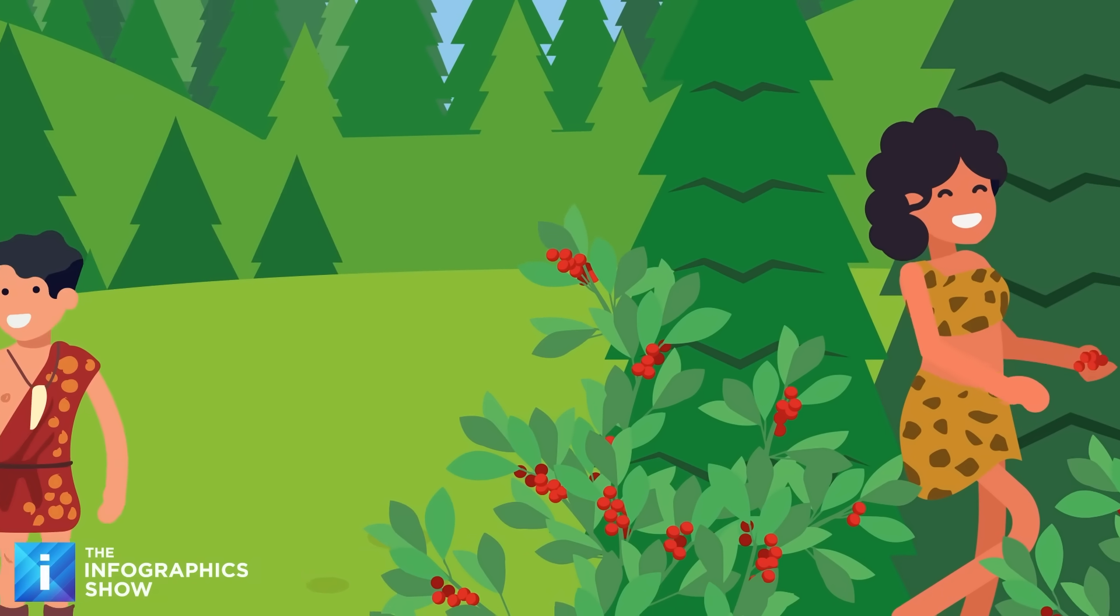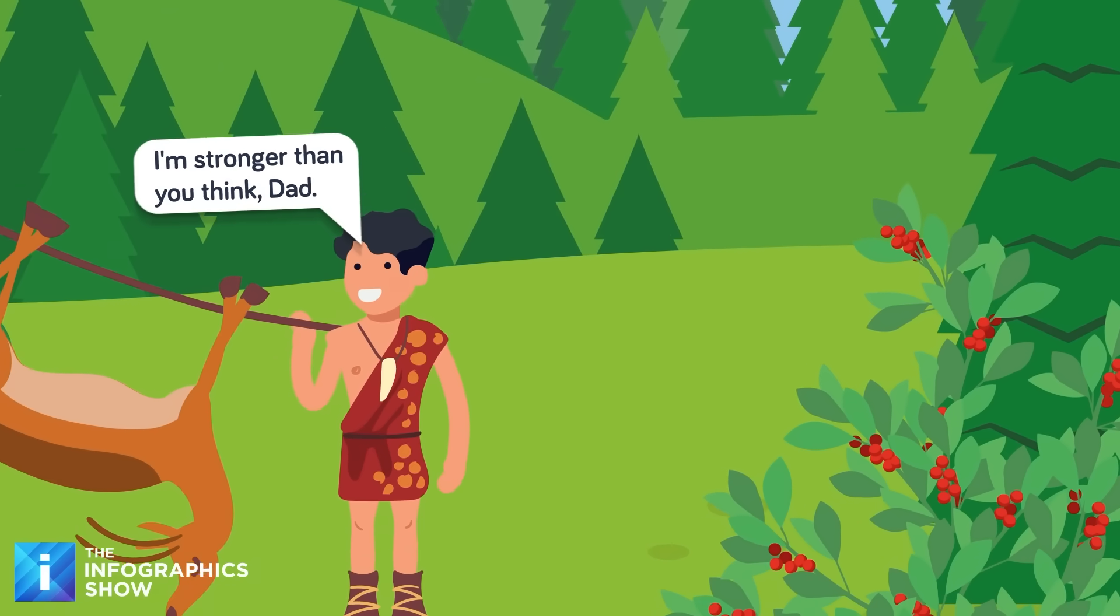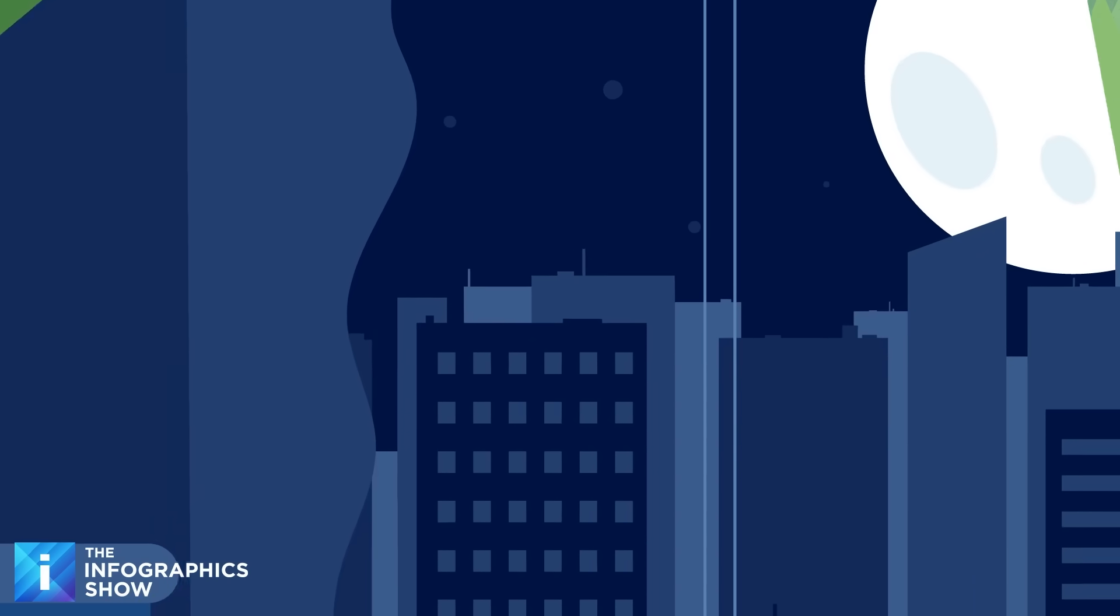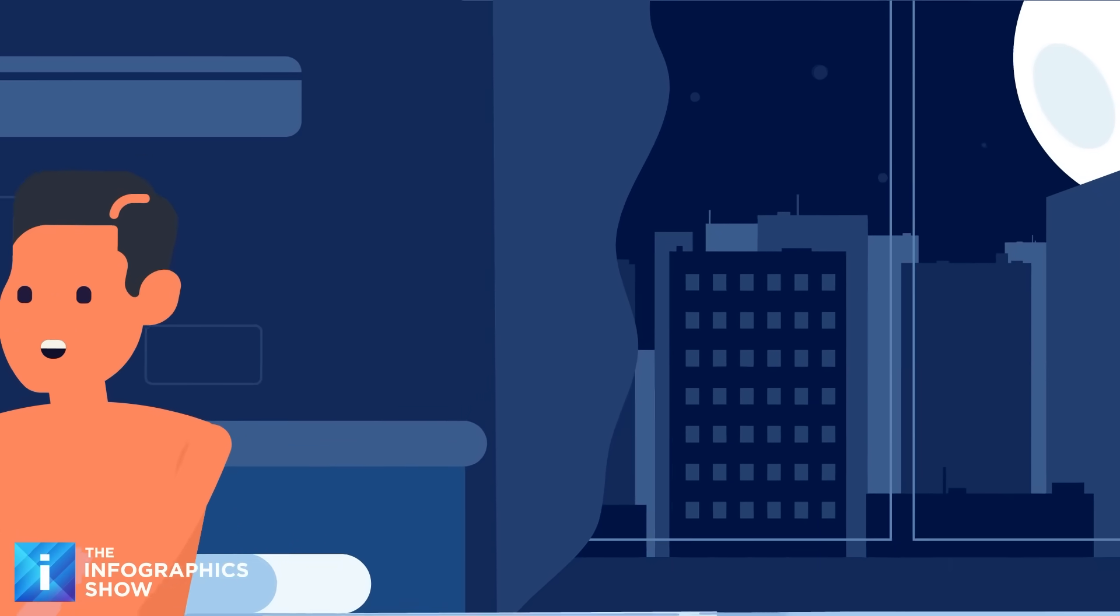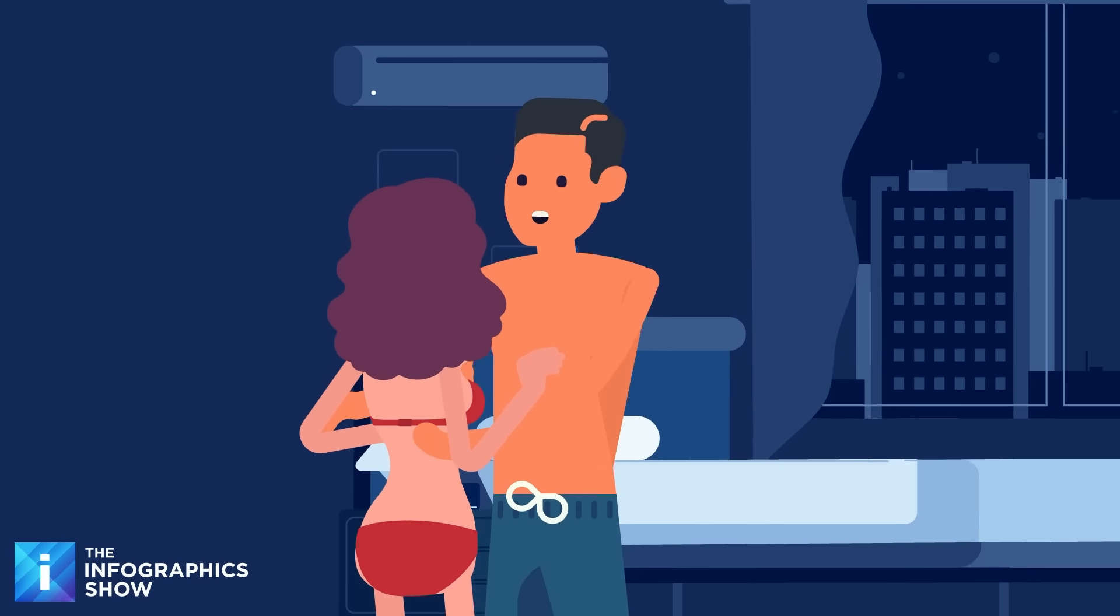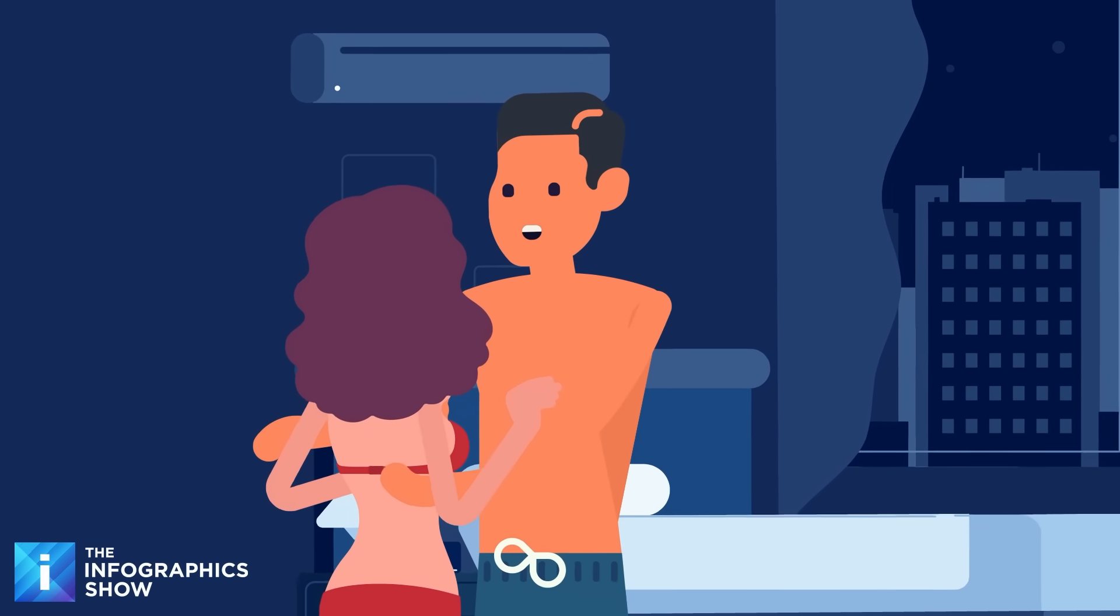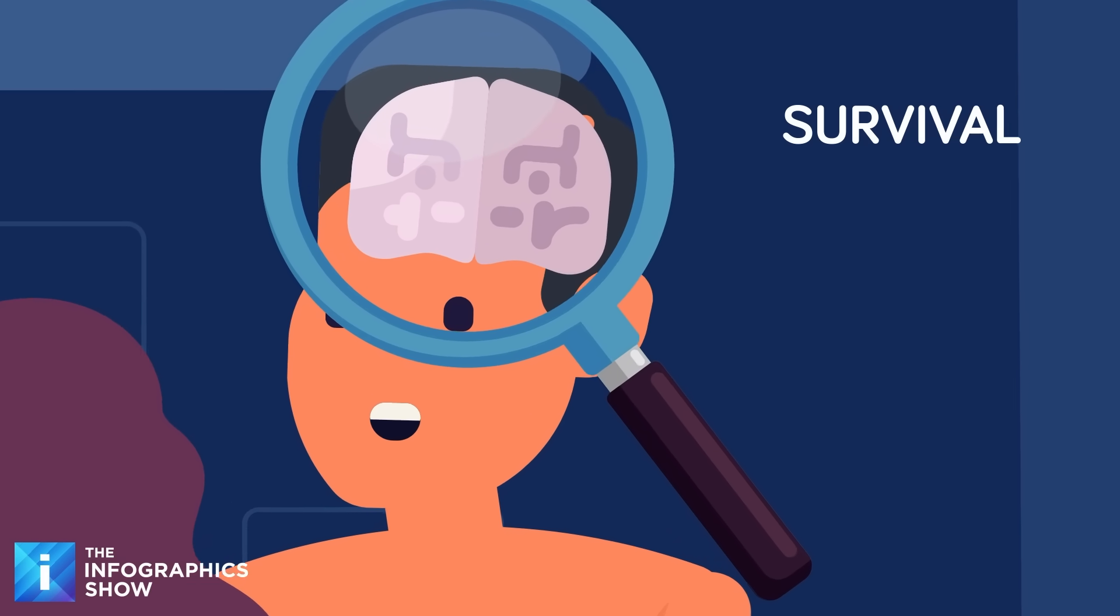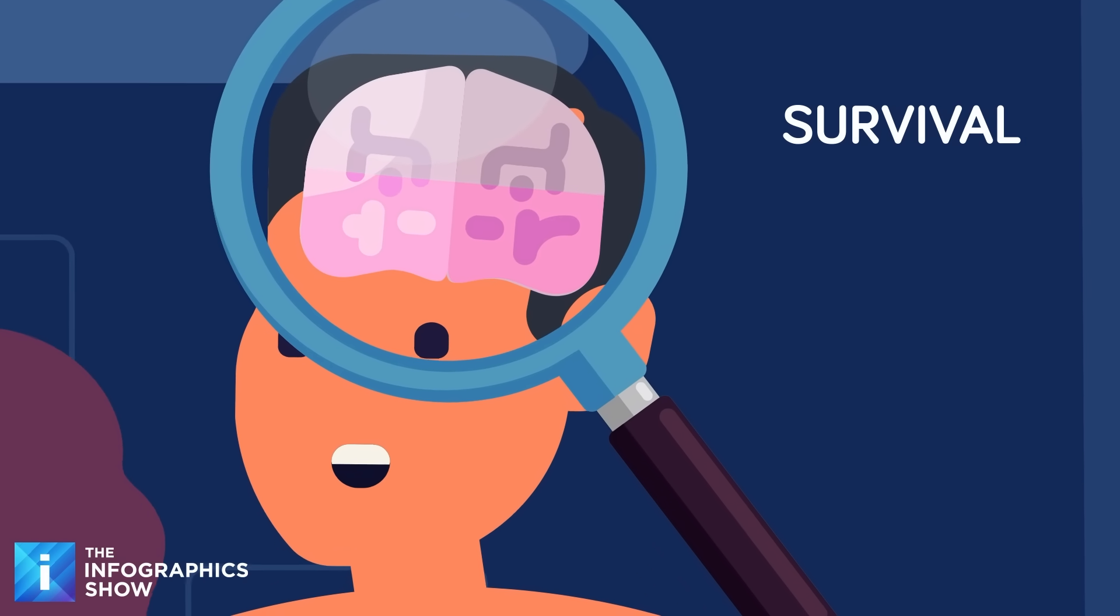By mixing genes with a partner, offspring are more adaptable and better equipped to survive whatever unpredictable future the environment throws their way. But you're probably not thinking about any of that while you're trying to unhook someone's bra. But deep down, your brain is hardwired to seek out a partner whose genes, when combined with yours, might give your future offspring the best shot at survival and ensure that 50% of you lives on.